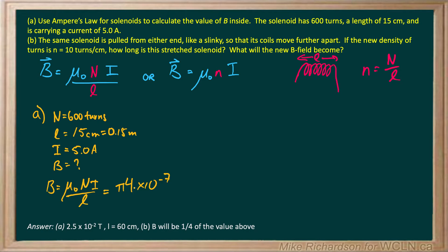The units for mu naught are Tesla meters over amperes. N is 600 turns, I is 5 amps, and the length is 0.15 meters. When I crank all of that through, I get a magnetic field down the center of that solenoid of 2.5 × 10^-2 Teslas.